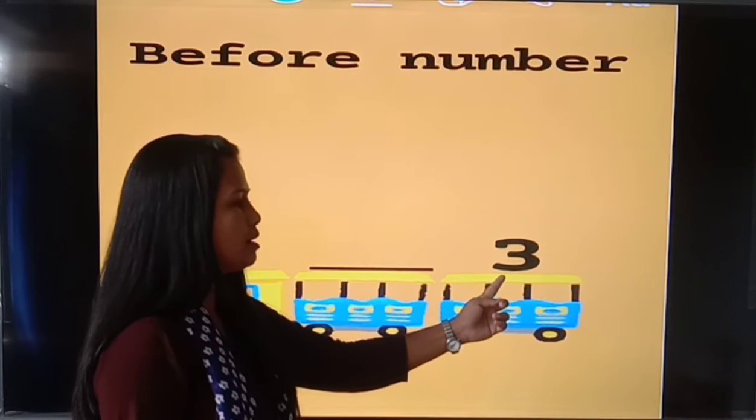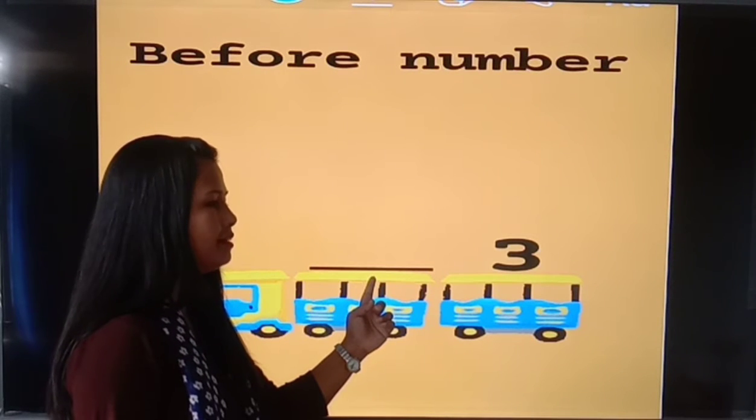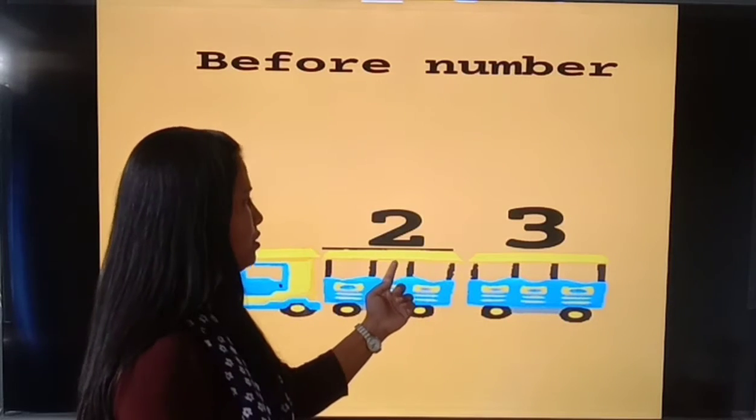Three. Which number is this? Three. Then what comes before three? Two. Two comes before three.